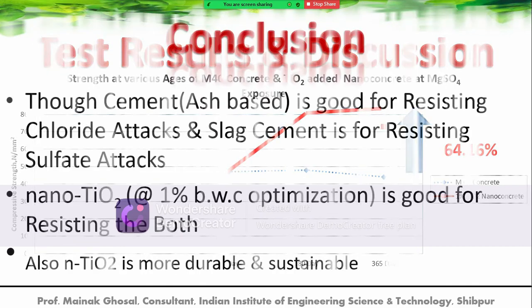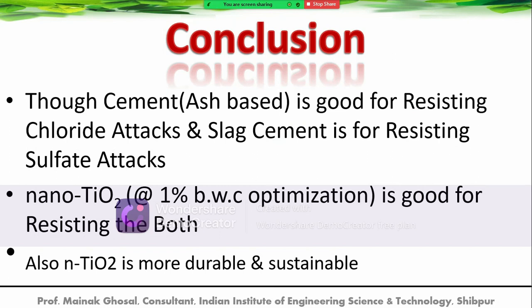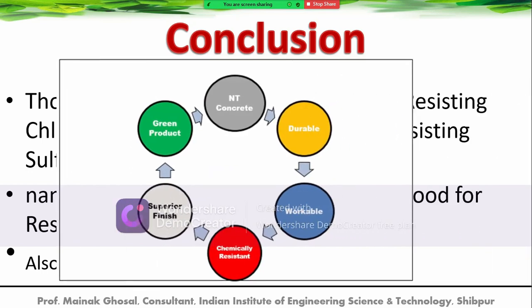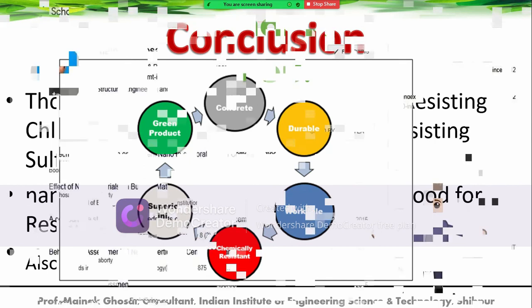Conclusion: there are many types of cement—one type is good for resisting chloride, another for resisting sulfate, and some for resisting both chloride and sulfate ions. Nano TiO2 is more durable and sustainable because it can be produced from waste materials. It makes concrete more durable, more workable, more chemical resistant, and provides a superior finish, as seen in its white color. It is a green product that can be synthesized from waste.